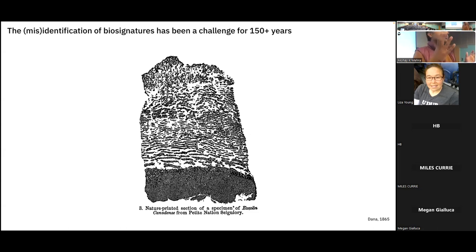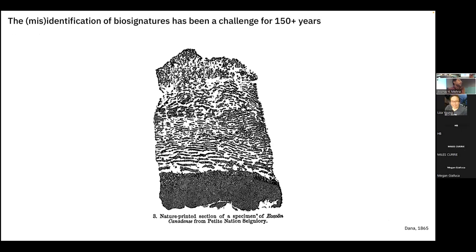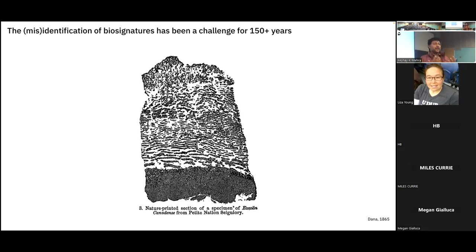Eosinium was thought to be a giant foraminifera, but almost immediately people started arguing it wasn't a biological fossil at all. That debate raged for 50 years. People looked at the morphology of Eosinium, trying to understand whether the canals they thought they saw matched the canals in a modern foram. Eventually people argued on the basis of morphology that Eosinium was not a biological construction. The nail in the coffin was when researchers found the same kind of limestone rock on the slopes of Mount Vesuvius, and people started to realize that Eosinium was a mechanical construction produced when igneous intrusions interacted with limestone.